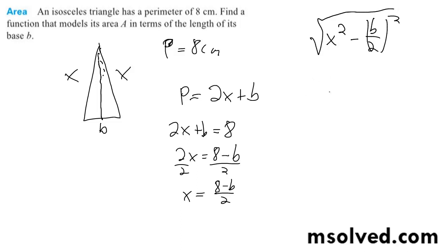So we just need to find that, well, actually we just did find that. So let me plug back in what we have for x, and this is what we're going to get. We're going to get the square root of 8 minus b over 2 squared minus b over 2 squared.